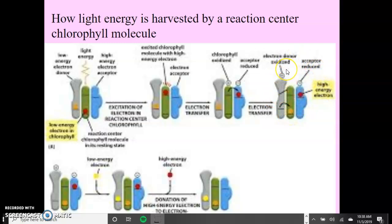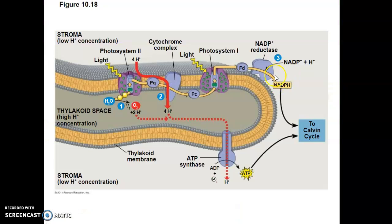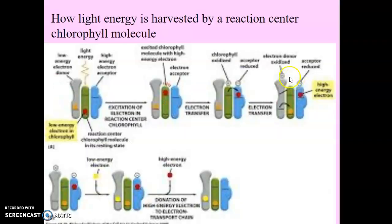This right here creates a further charge separation, so to speak, because this is now positively charged — it's been oxidized. And the electron donor is positively charged, while the electron acceptor is negatively charged and has been reduced.